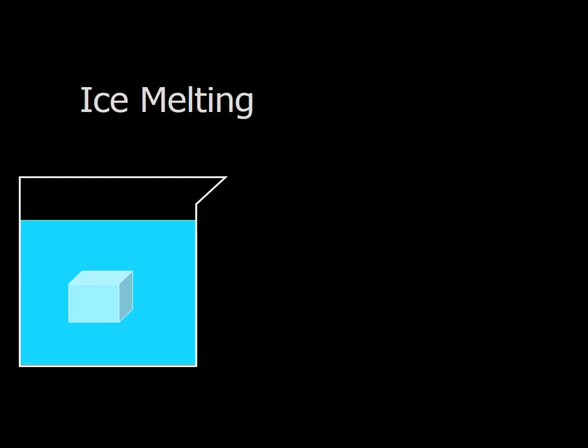Let's consider another situation. Say we have a piece of ice that's melting in a beaker. In this case, if the ice is defined as the system, the ice is going to gain heat from the surroundings.